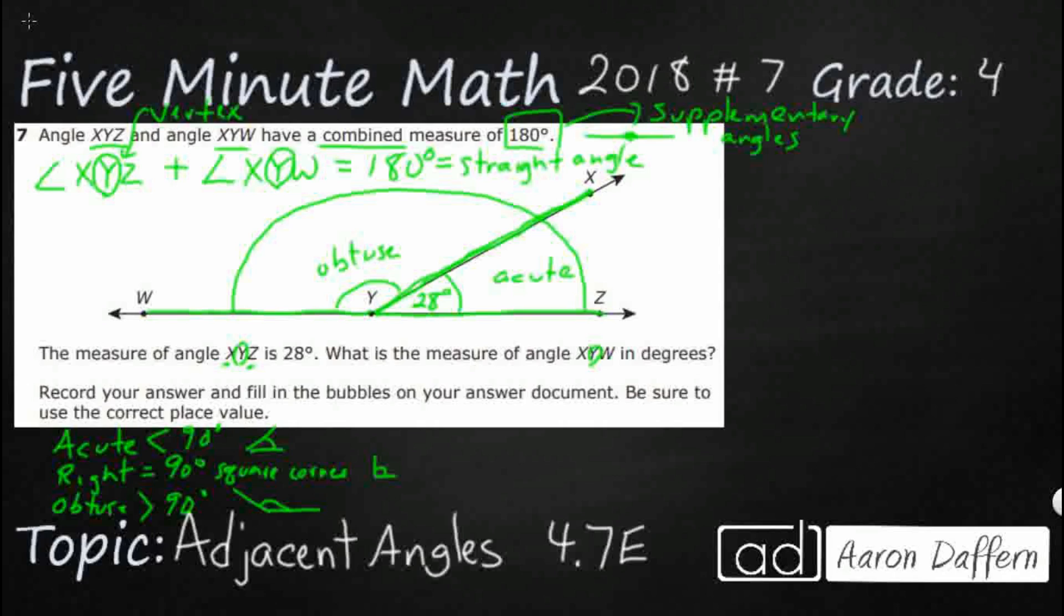That's going to be this obtuse one in degrees. Well, if it seems pretty simple once we've labeled all this, that means you're doing it right. We know the entire thing is 180. So we're going to take our XYZ 28 degrees plus XYW equals 180 degrees. So we can either add up from 28 or the easiest way to do it would be just to subtract: 180 minus 28. Make sure we regroup. That's a seven, and that is going to be two. That is going to be 152.